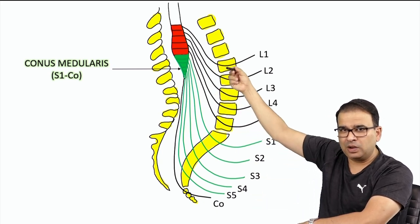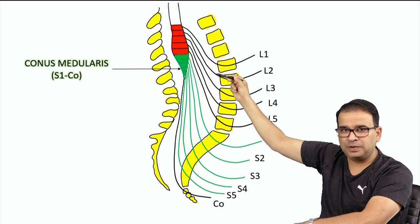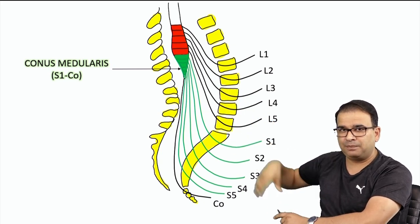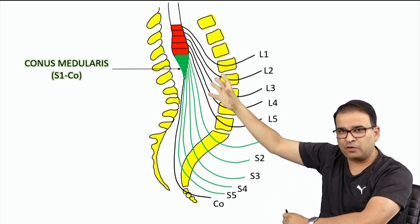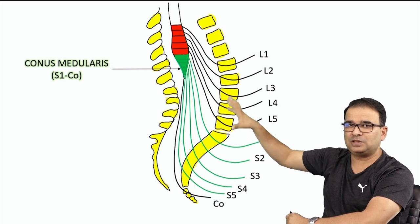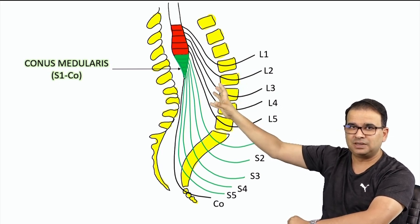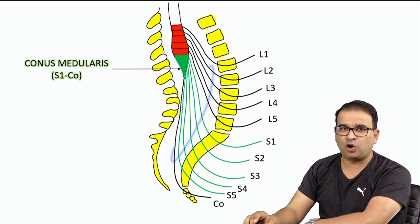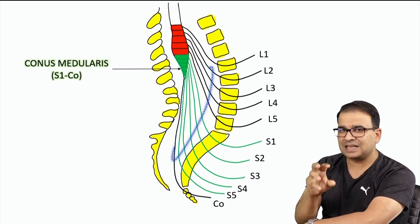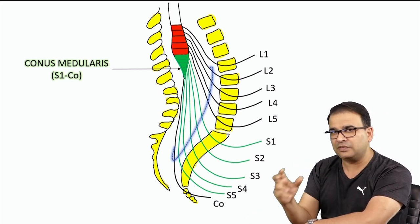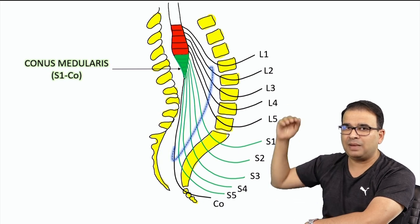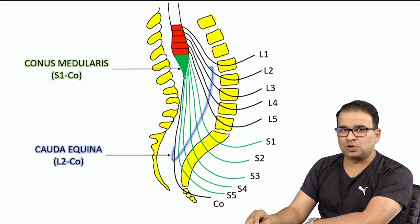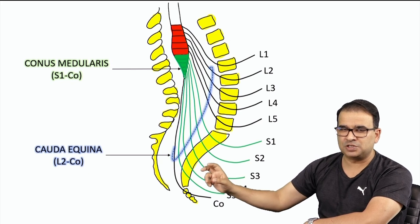Below the lower border of L1, all the nerves present below the spinal cord have to come out from their respective intervertebral foramina. They form a horse tail-like structure, and that is what we call the cauda equina. The nerves related to cauda equina are from L2 again till the coccygeal — so cauda equina is about L2 to coccygeal.